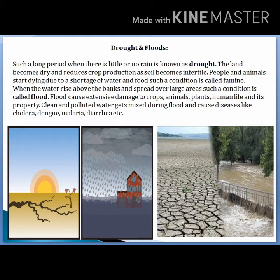When the water rises above the banks and spreads over large areas, such a condition is called a flood. In our country there is rainfall during the monsoon season. Flood occurs when water levels keep increasing. Human life, plants and animals are all affected. Transportation, communication, and infrastructure systems are all damaged. Floodwater is also contaminated and spreads many diseases.